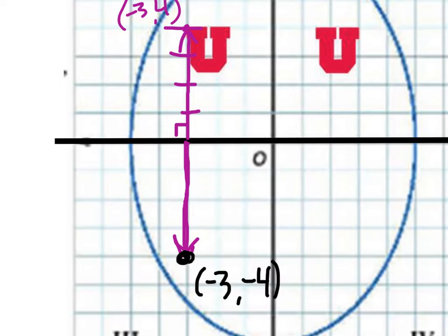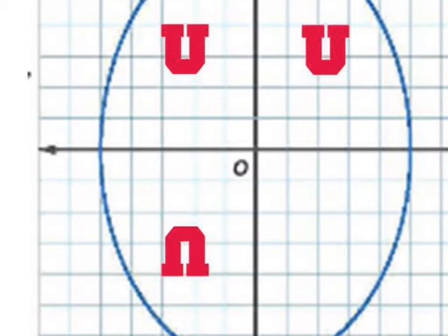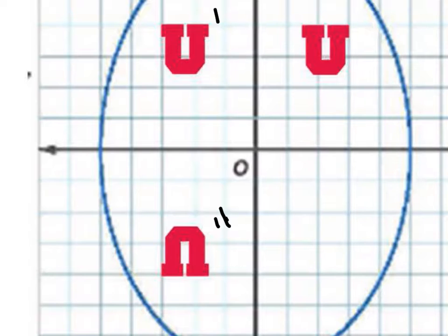If we draw the rest of this, now you can see the transformations. The first one is U — that's our pre-image. Our next one would be U prime, and this one would be U double prime. Notice what happened to the image: when we reflected it over the x axis, it turned it upside down. When we reflected it over the y axis, all it did is flip it.